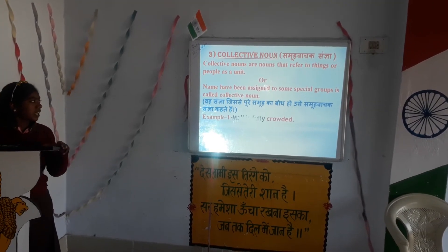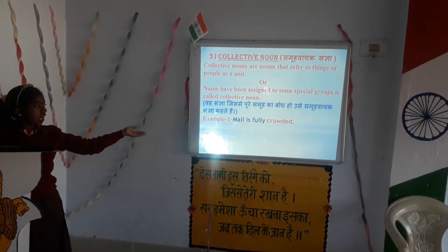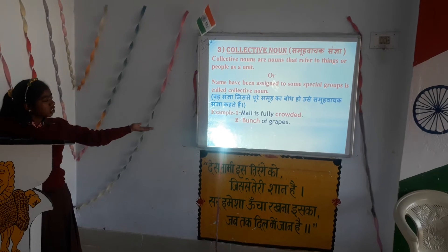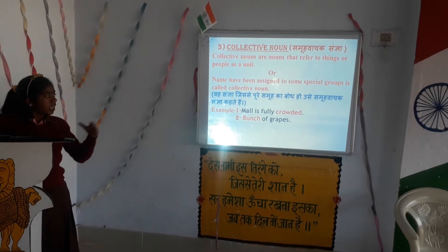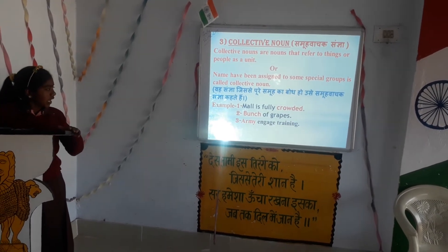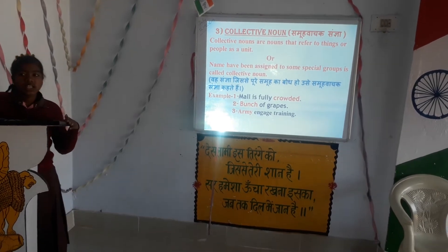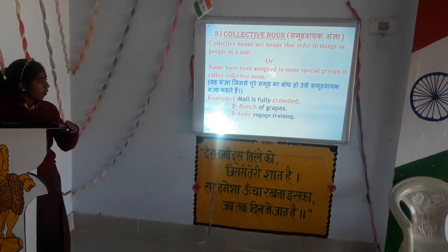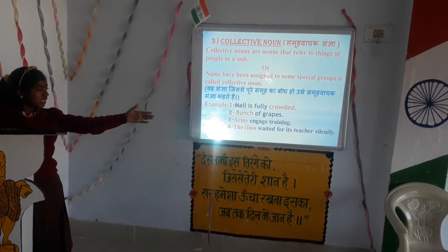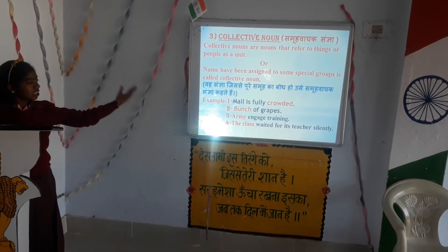First, the mall is fully crowded — crowd is a collective noun. Second, a bunch of grass — bunch is a collective noun. Third, the army is training — army is a collective noun. Fourth, the class listened silently — the class is a collective noun.